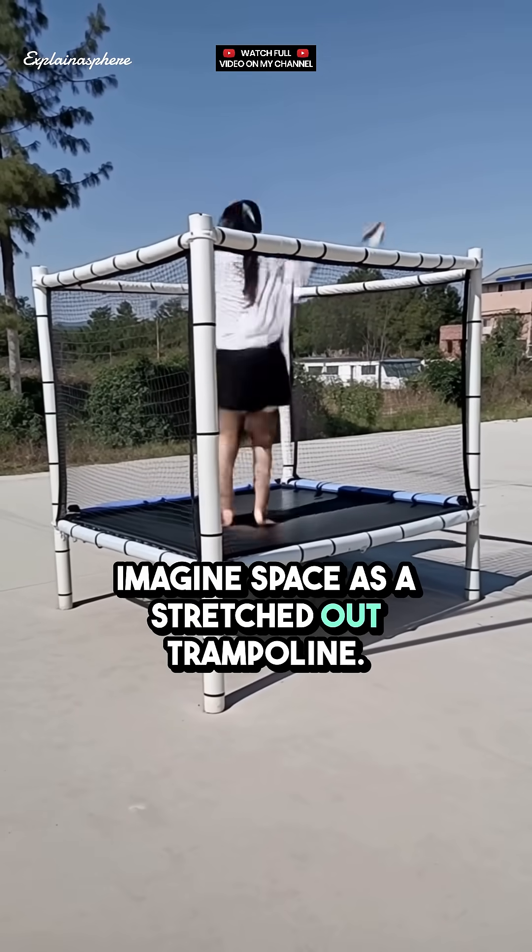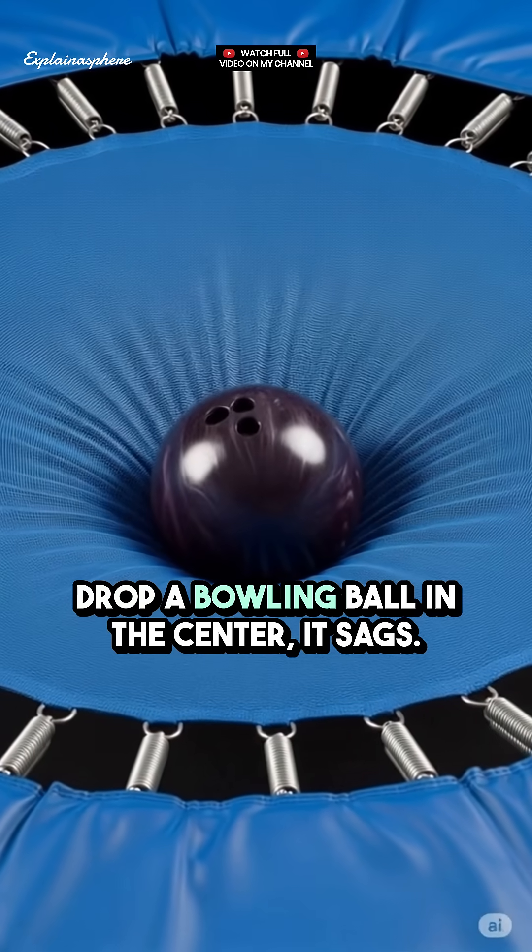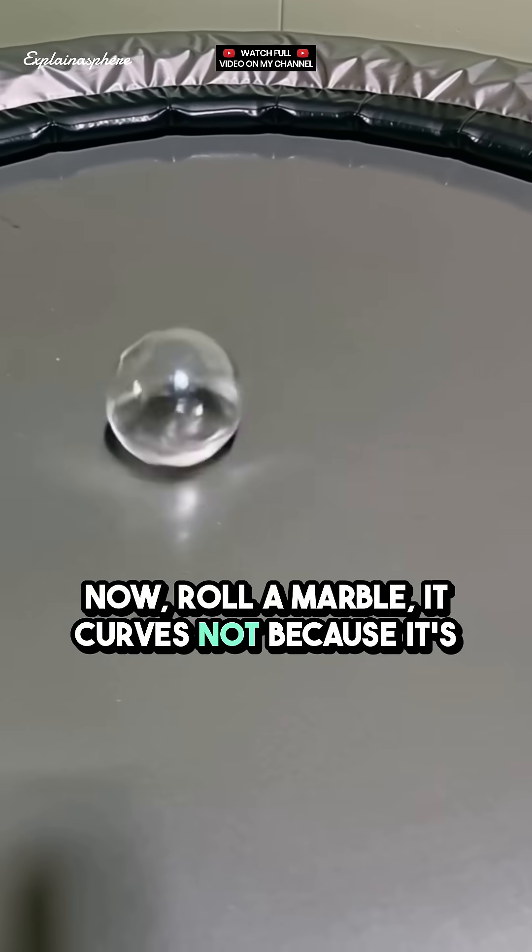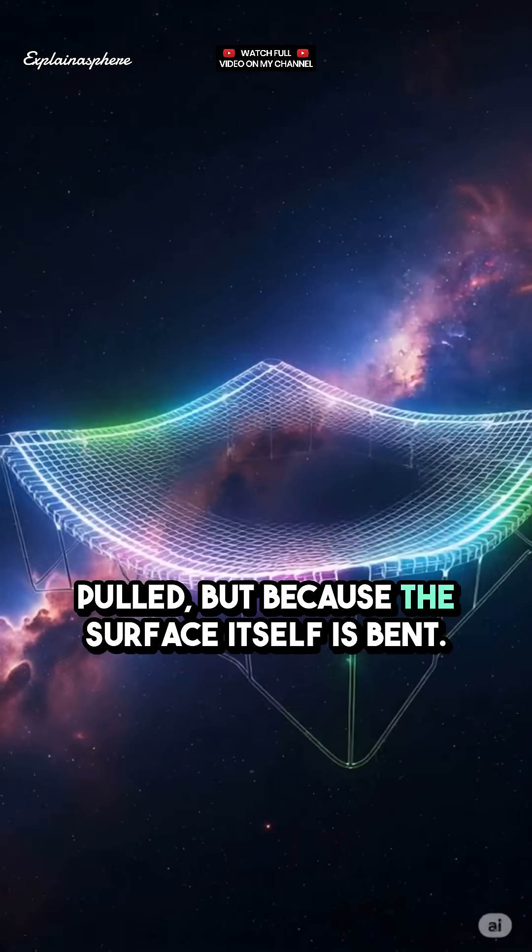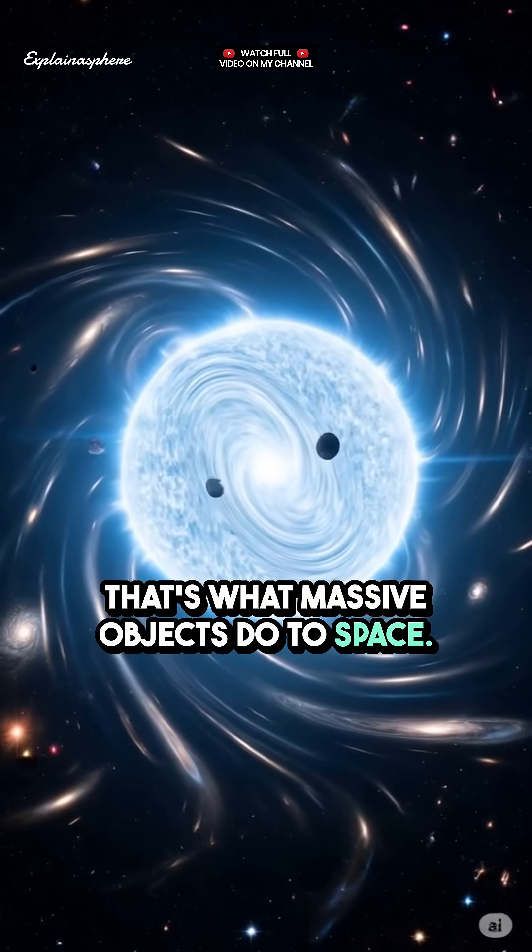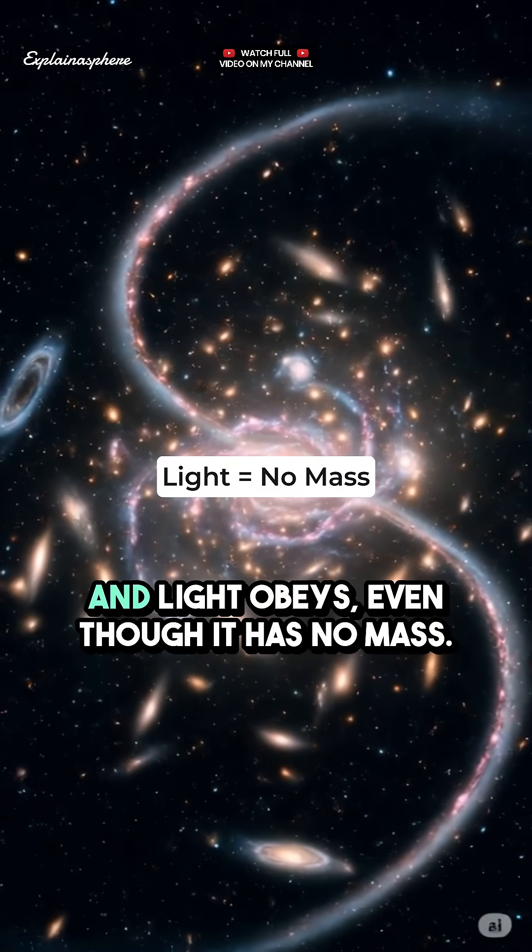Imagine space as a stretched out trampoline. Drop a bowling ball in the center. It sags. Now roll a marble. It curves, not because it's pulled, but because the surface itself is bent. That's what massive objects do to space. They reshape it. And light obeys, even though it has no mass.